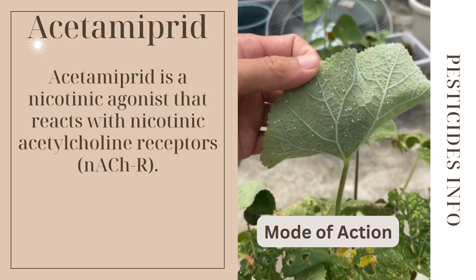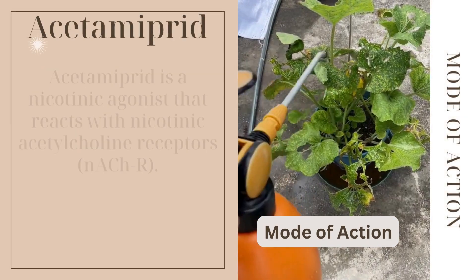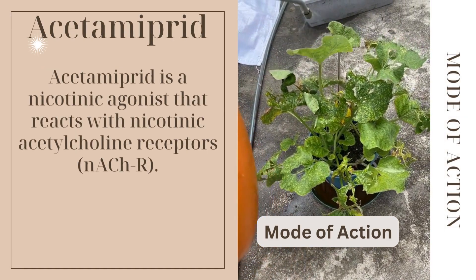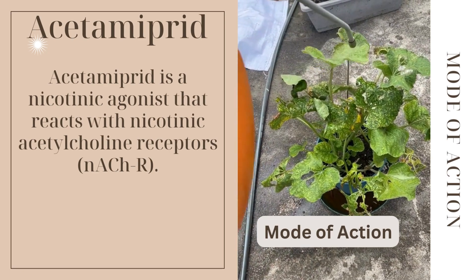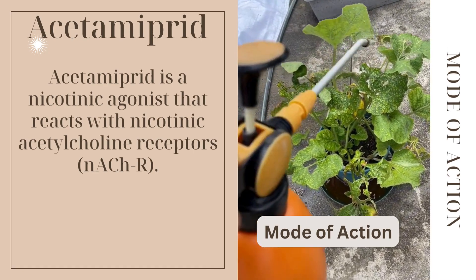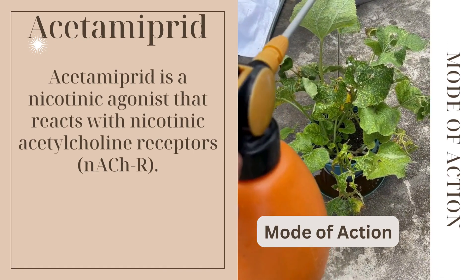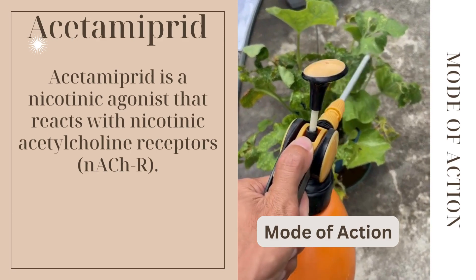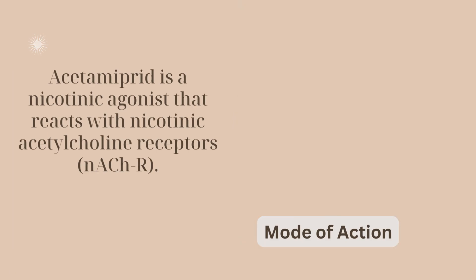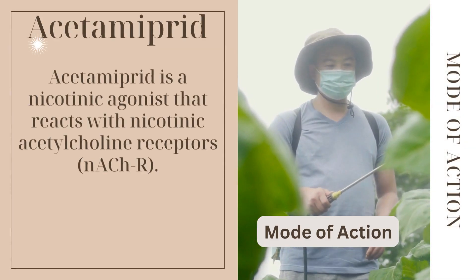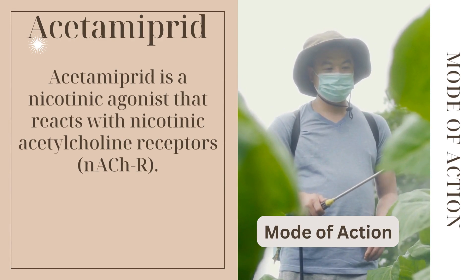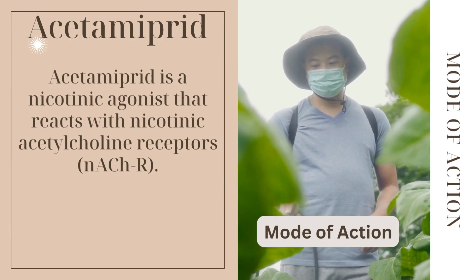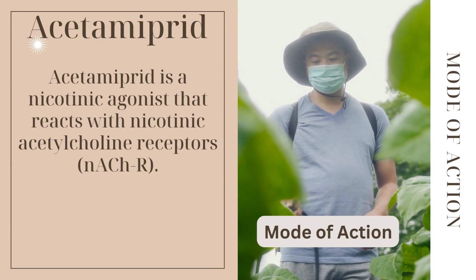Mode of action. Acetamiprid exhibits systemic properties allowing it to be absorbed by plants and translocated throughout their vascular system. When applied to foliage, Acetamiprid is taken up by the plant and distributed to various plant parts including leaves, stems, and even roots.